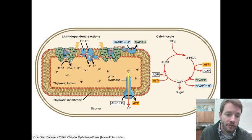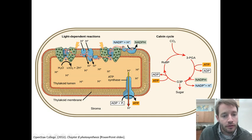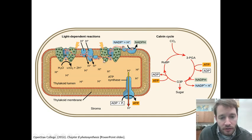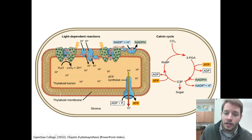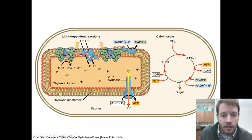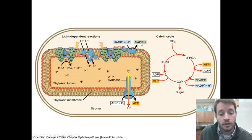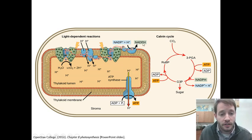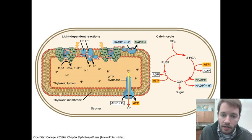Going back to the splitting of water, that electron zips through photosystem 2, some other proteins, photosystem 1, and then eventually it allows the hydrogen ion to be linked to NADP+ to create NADPH. The two products of the first phase of photosynthesis — the light-dependent reactions — are NADPH as well as ATP.